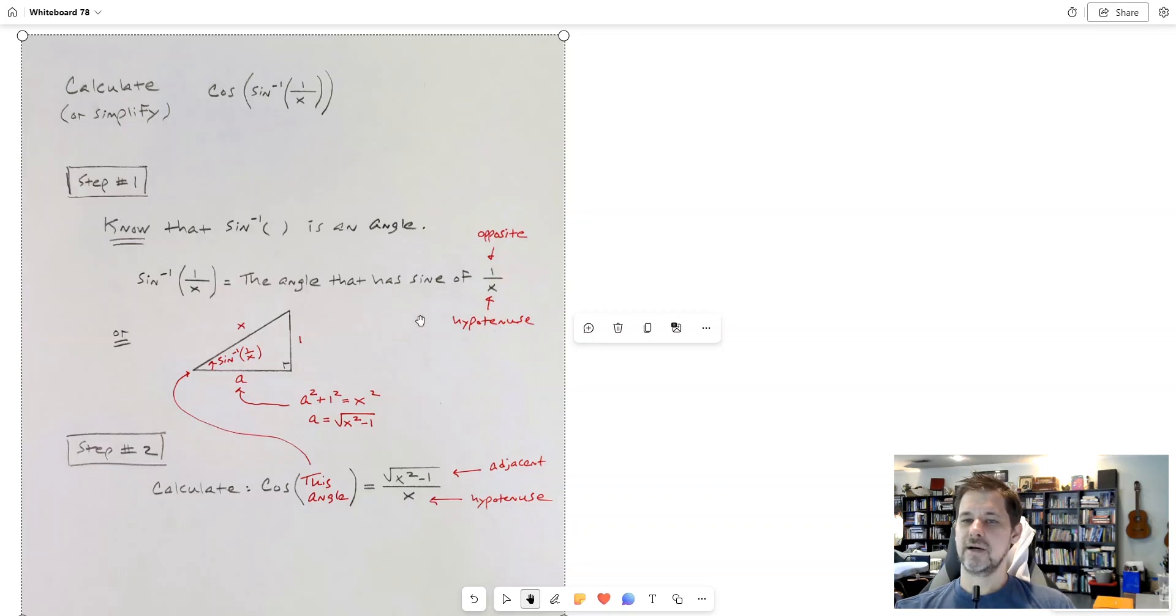So how would you think about the angle that has a sine of 1 over x? Let's say what's sine? Sine is opposite over hypotenuse with respect to a right triangle. So if I was going to look at the angle that had a sine of 1 over x it looked like this. See?